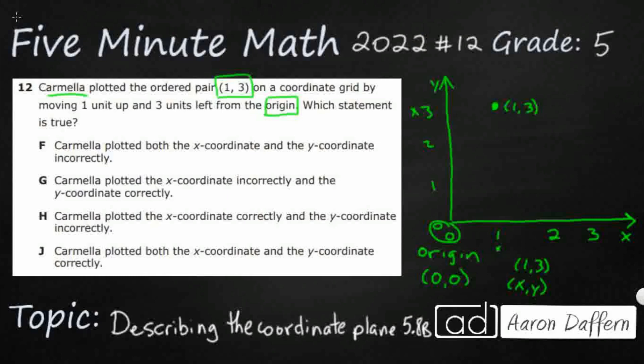Let's see what it said Carmela did — by moving 1 up. So Carmela went 1 up right here, and then 3 units left. This is something we'll get into in 6th grade: negatives. It also goes down for negative y. So we've got a negative x here — 1 up and 3 to the left. So that's where Carmela ended up. The x is negative 3 and the y is 1 right there.